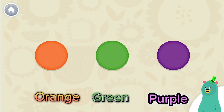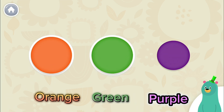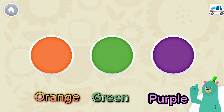Tap the three colors. Orange, green, purple. You tapped orange, green, and purple.